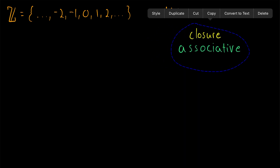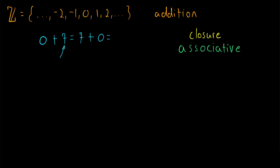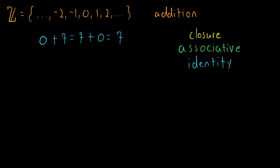Is there any element of the integers that, when added to any other element, leaves it unchanged? The answer is zero. If we add zero to seven — zero plus seven or seven plus zero — zero being added to seven leaves seven unchanged. And this is the case for any integer. Thus, zero is called the identity of the integers under addition, or simply the additive identity, because zero preserves the identity of any element it's added to. The existence of an identity is the third group axiom.